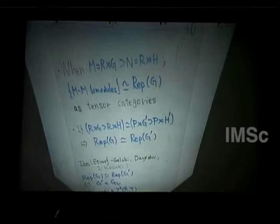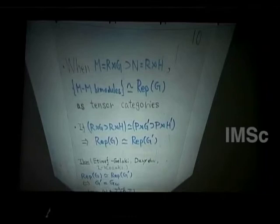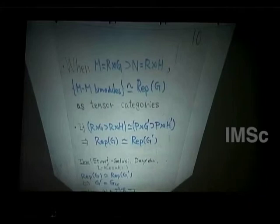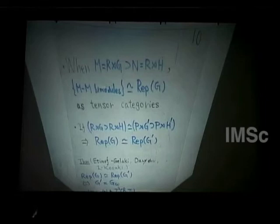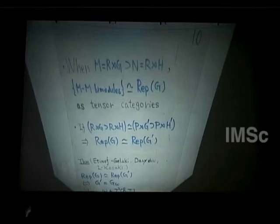For the group-subgroup subfactor, there is not only a one-to-one correspondence between irreducible M-M bimodules and irreducible representations of G — it is actually an equivalence of tensor categories. The M-M bimodule category associated to this inclusion is equivalent to the representation category of G as an abstract tensor category.